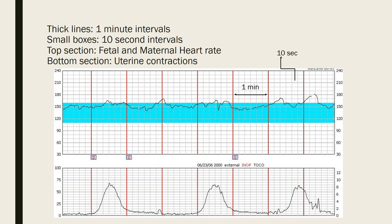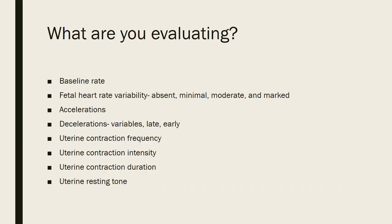From thick line to thick line is one minute. This one minute mark is from red line to red line. Each of the small boxes are 10-second intervals. There are six 10-second boxes from one thick line to the next thick line, showing your 60 seconds. The top section is always going to be where your fetal heart rate and maternal heart rate show, and the bottom portion is going to be the uterine contractions.